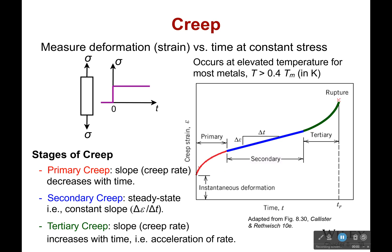Let's talk about creep. Creep is when, at elevated temperatures, your strain will change even if you have a constant stress. Something will continue to stretch even though you're not pulling any harder. This usually occurs at elevated temperatures — about a little bit less than half the melting point in Kelvin — and you're getting close to that creep point. Below that temperature, you apply stress and strain will be constant; above that temperature, that's when you begin to have issues.